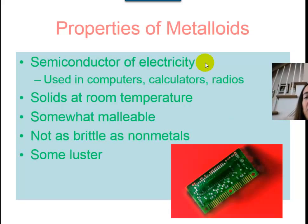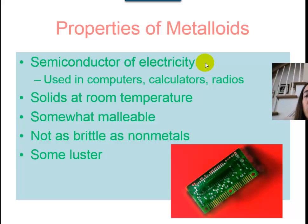That leaves us with the metalloids. Metalloids are really in between, just like their location on the periodic table. They have some properties similar to metals and some similar to nonmetals. Metals are conductors, nonmetals are nonconductors, so metalloids are semiconductors — a term you've heard used a lot in computers and electronic gadgets in our everyday lives. Most metalloids are solids at room temperature. They're a little bit malleable but not as malleable as metals, a little bit brittle but not as brittle as nonmetals, and they have some luster but not as much as metals.